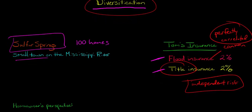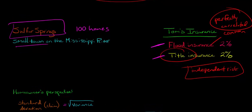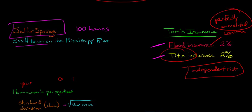This is going to become relevant as we talk about diversification, because ultimately what diversification does is it averages out independent risks, but it can't do anything about common risk. Let's calculate the standard deviation of the chance of a claim from the homeowner's perspective. As a homeowner, you can either have nothing happen — which we'll categorize as zero — or you could have a claim, which we'll categorize as one. It's just a binary option. There's a 98% chance that you won't have a claim and a 2% chance that you will.